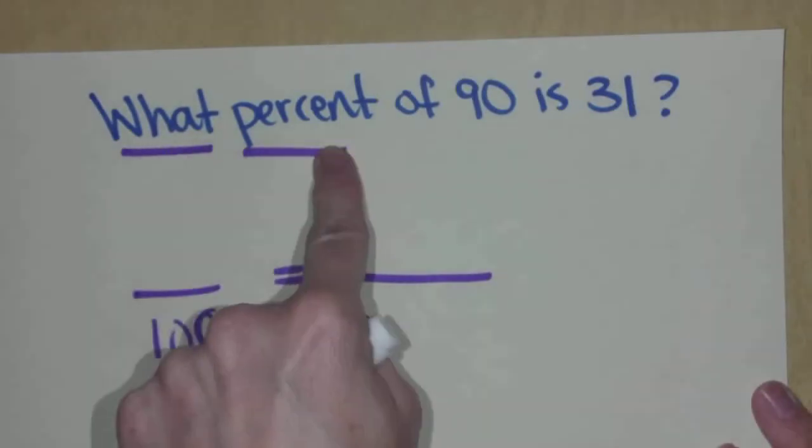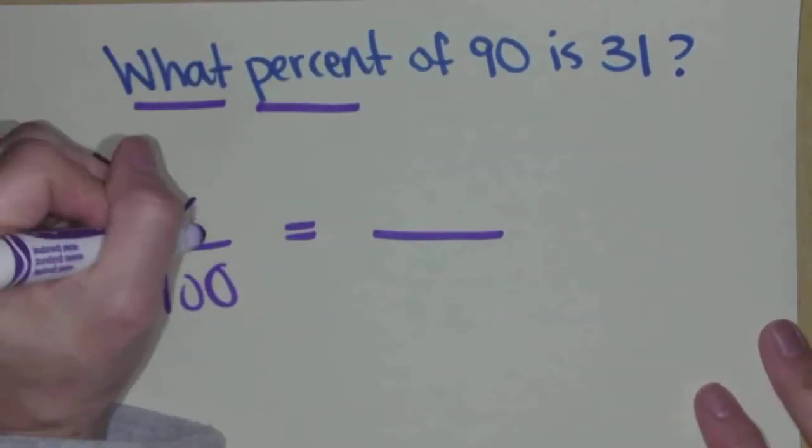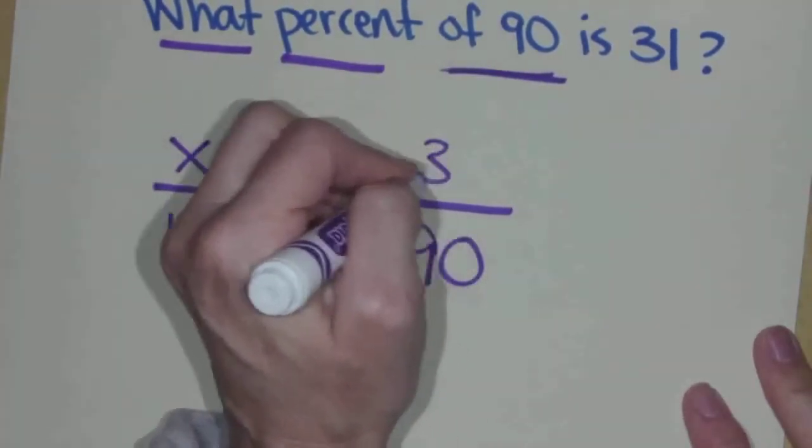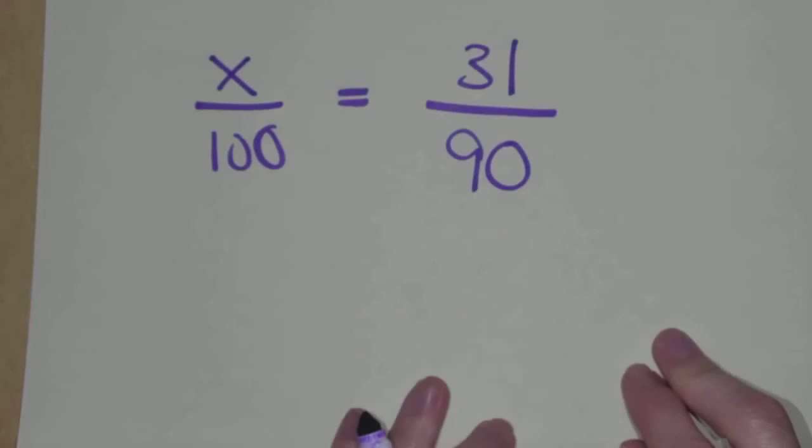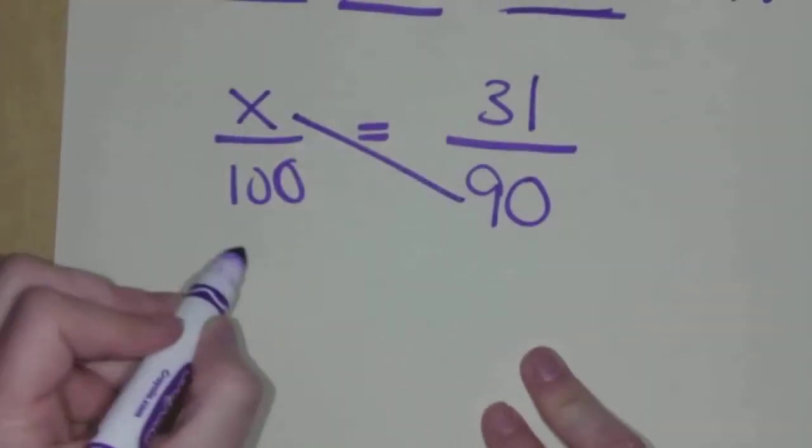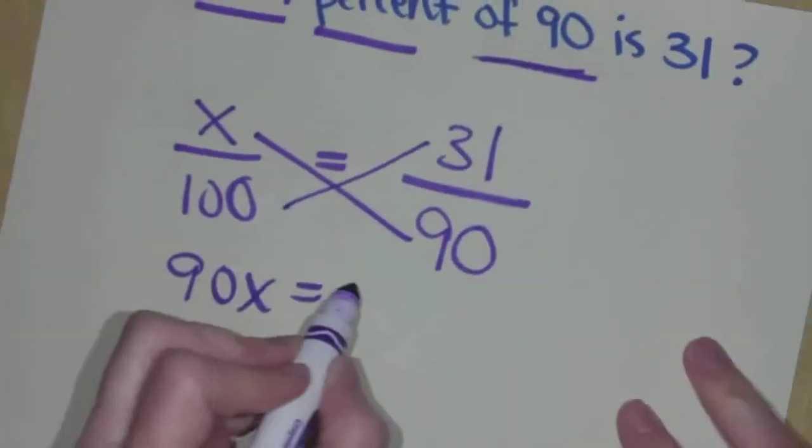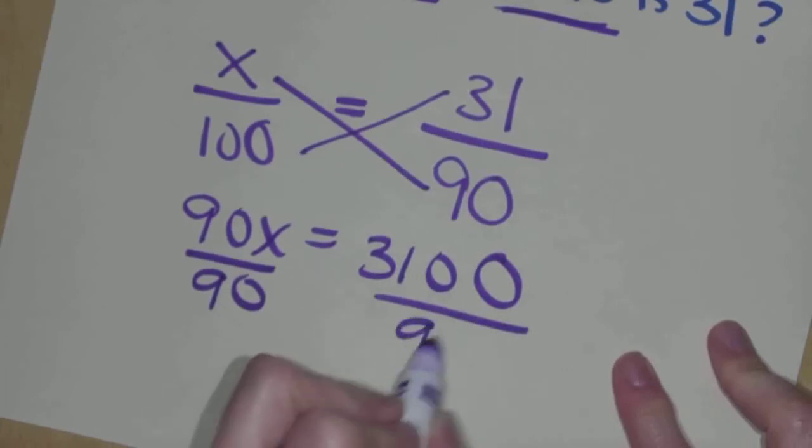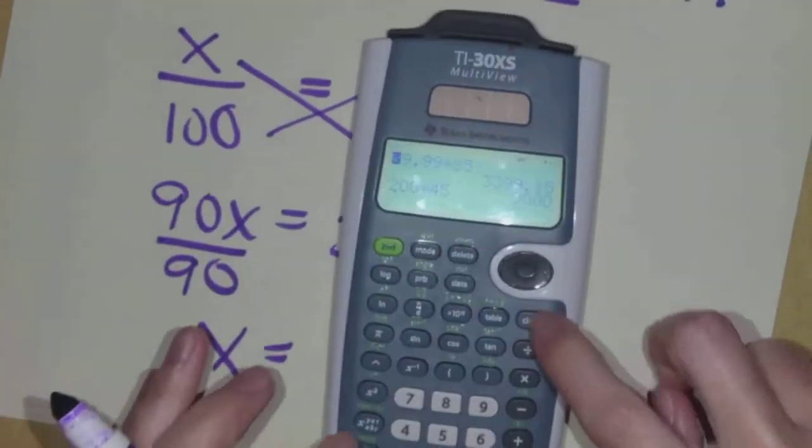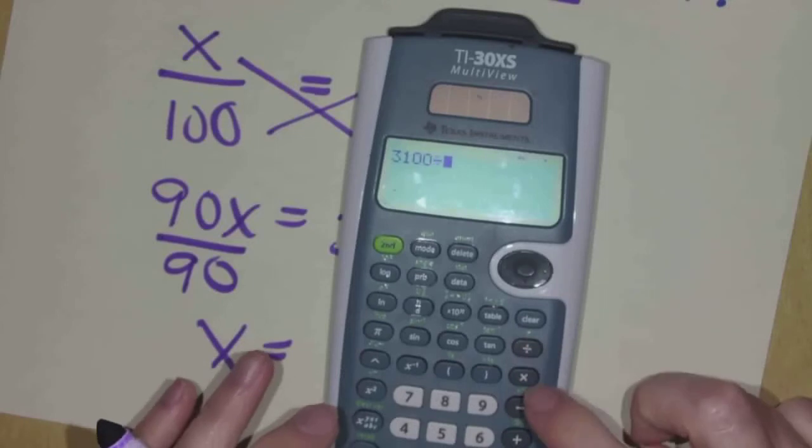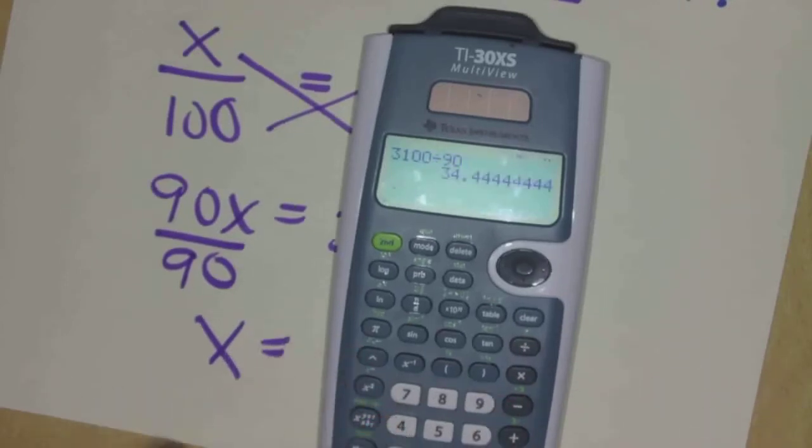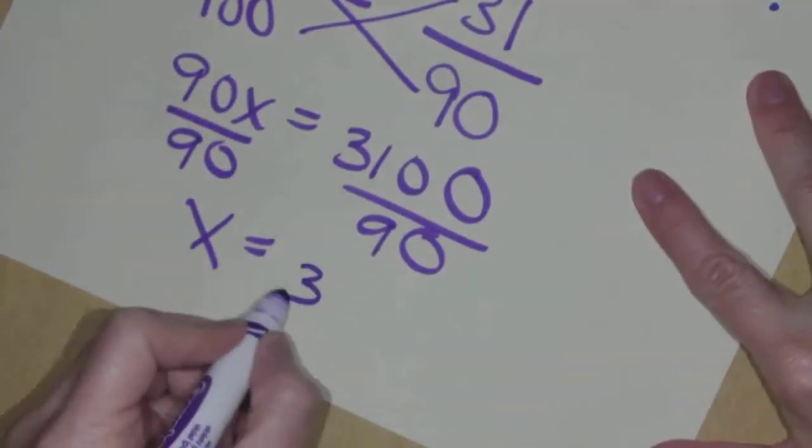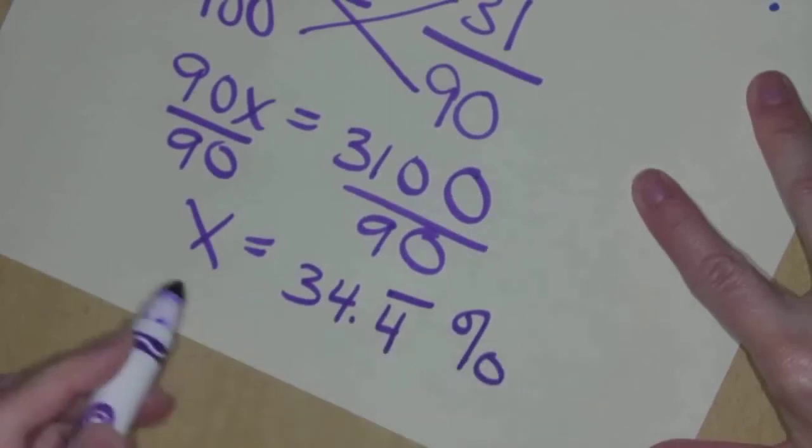We're looking for the percent. So guess where the X goes? Right there. What percent out of 90 is 31? Cross multiply. 90X equals 3100. Divide by 90. That one I don't know. So if I take 3100 divided by 90, 34.4 repeating. So I'm going to say 34.4 repeating percent. Ta-da!